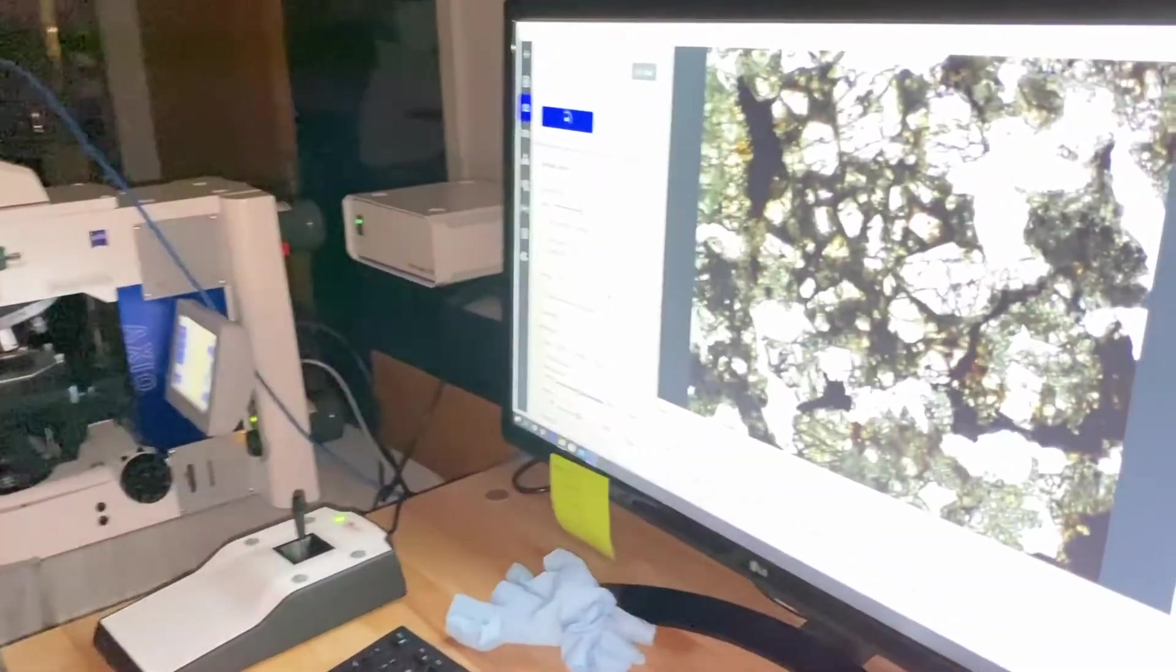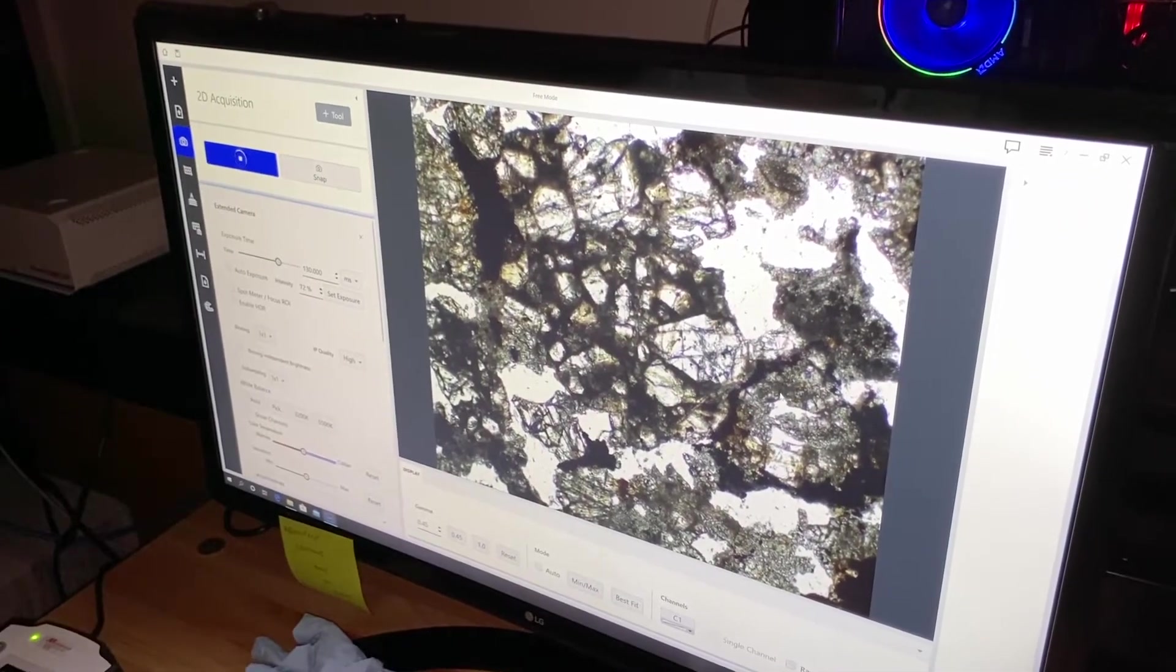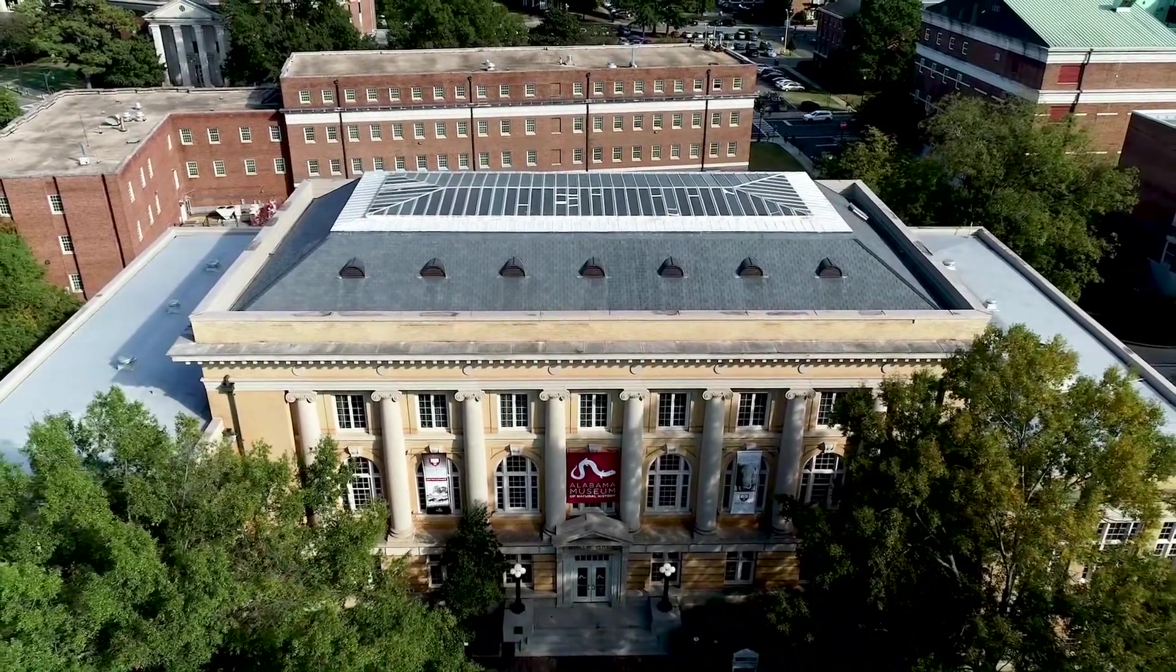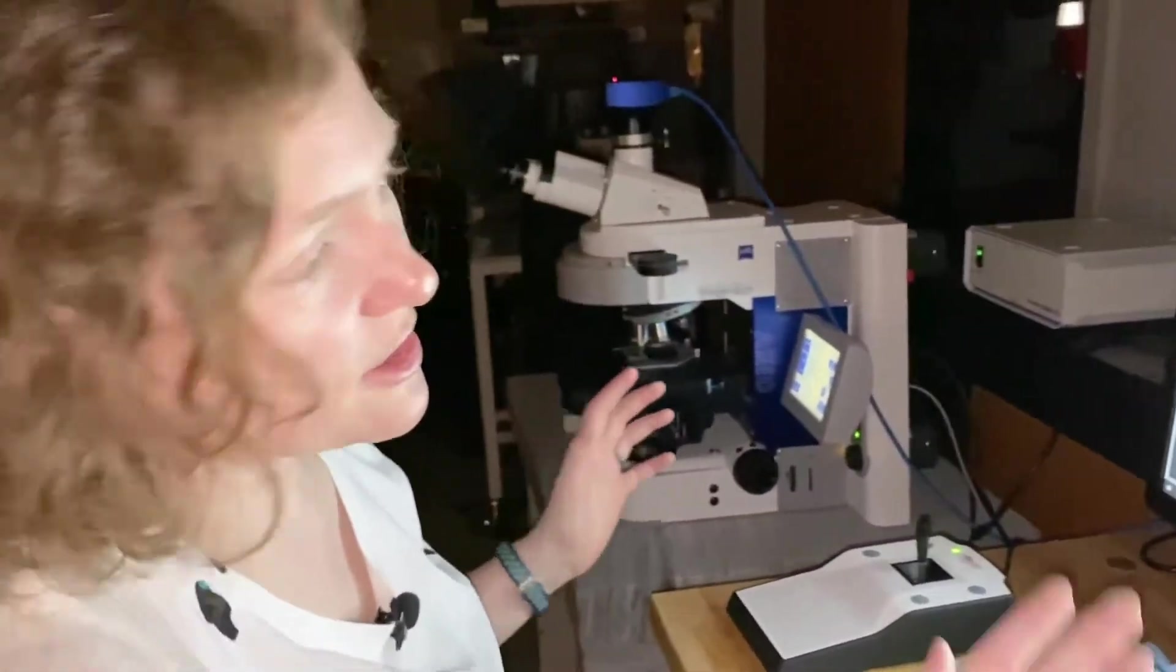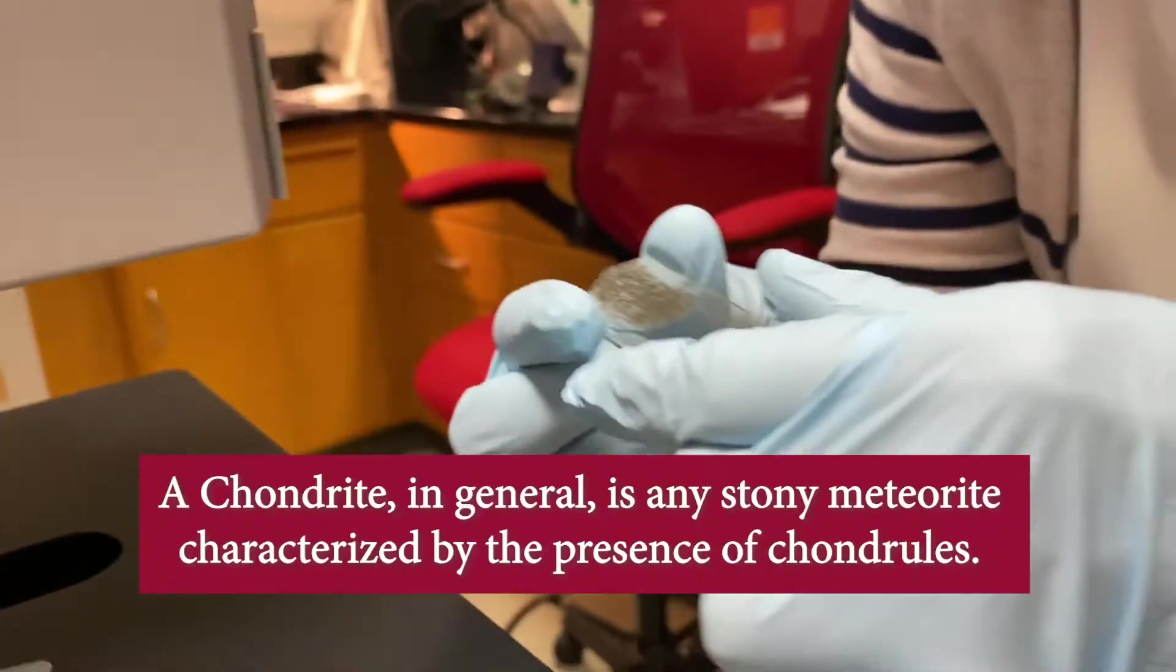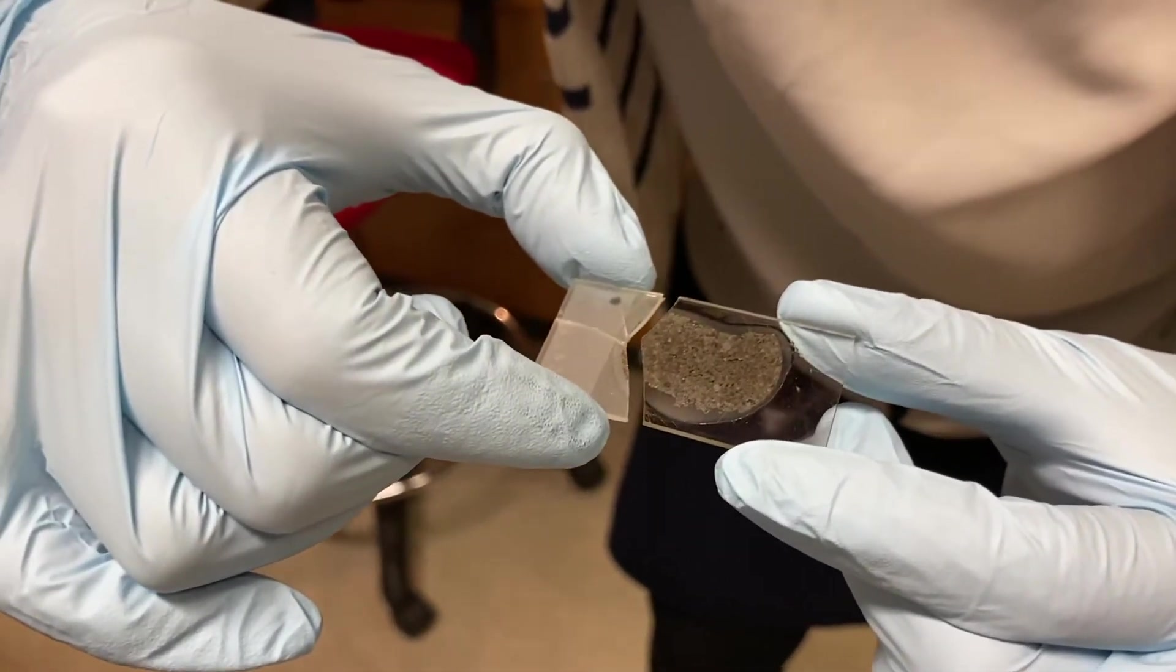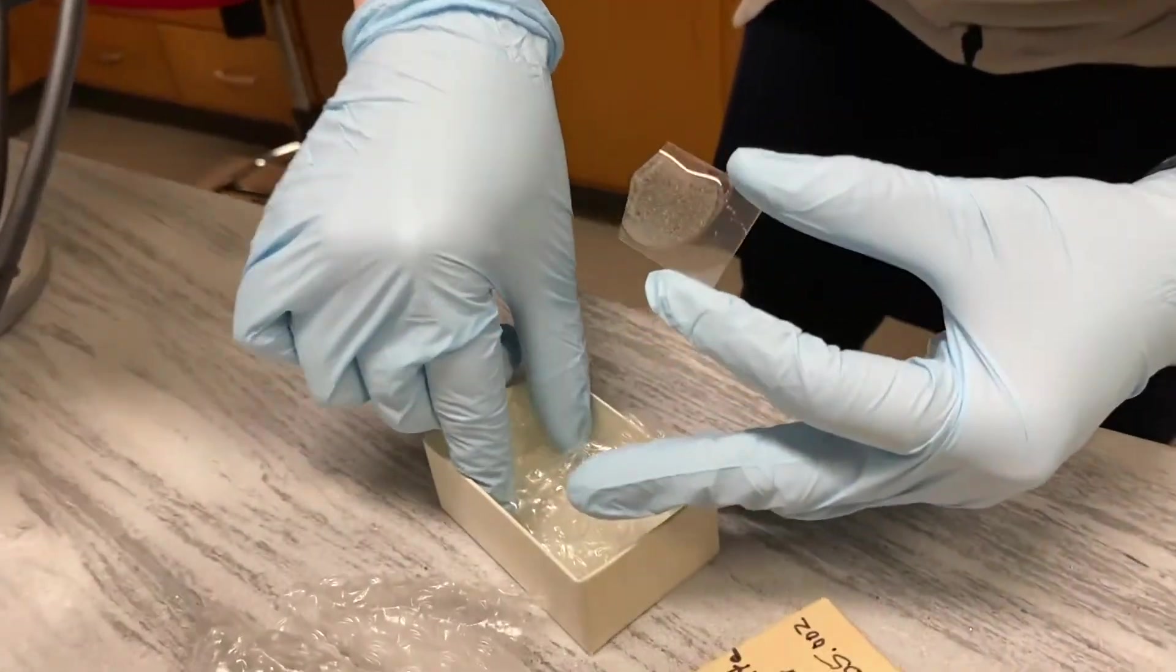So I'm currently examining a thin section of the Sylacauga meteorite, also known as the Hodges meteorite. This is provided to me by the Natural History Museum here in Tuscaloosa. I'm using some of the instrumentation in my lab to get a really good look at this sample. Every time I look at it, I see something brand new. It's a meteorite known as a chondrite and it contains some really fascinating phases and different crystals and minerals that are really exciting and quite beautiful to look at.